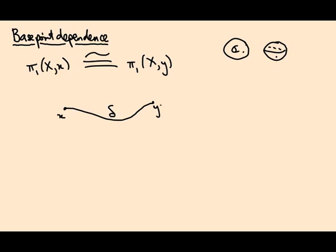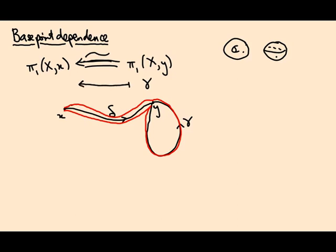So what's the idea? The idea is if I start with a loop based at y, so my map is actually going to go this way, from π₁ at y to π₁ at x. If I start with a loop at y, and I have a path from x to y, what I can do to get a loop at x is, looking at the picture, I can go along delta, around gamma, and then back along delta. So this map is going to send gamma to delta gamma delta inverse.